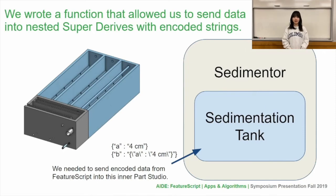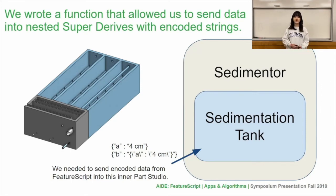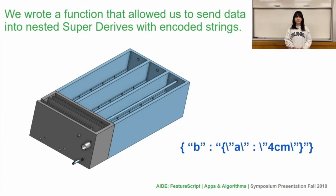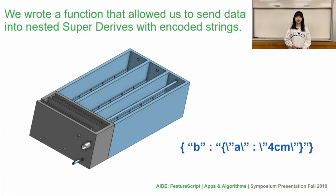We wrote a function that allowed us to send data into nested SuperDerive with encoded strings. For example, we want to SuperDerive parts and a sedimentation tank within the Sedimentary Part Studio. We needed to send encoded data from FeatureScript into this inner Part Studio. So we wrote one function to SuperDerive parts, and a second function that can create nested SuperDerives up to whatever level we need. This is how the configuration looks in Sedimentary Part Studio normally, but as the part gets SuperDerived, the configuration looks different. The first function made the values into the required form, and the second function added the backslashes in order to SuperDerive into one level. This way, all the SuperDerived parts within Sedimentary Part Studio can create the whole sedimentary component itself.